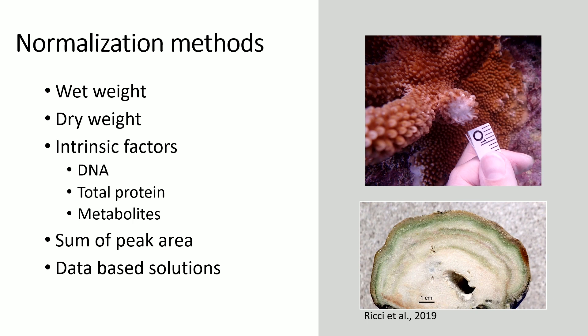Corals provide a really unique matrix that doesn't fully work with all of these different normalization methods. Corals have tissue, which is where most of the biological compounds are found, but they also have a skeleton made mostly of calcium carbonate and only less than 1% biological molecules. So how do we make sure that when we grind these corals into a powder to do extractions for mass spec, we're not diluting certain samples with part of the coral skeleton?